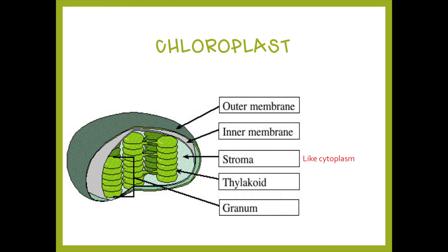Inside the chloroplast you'll find these little discs as you can see in the image. Each disc is called a thylakoid — think of it like one dinner plate. When you have a stack of thylakoids, that's called a granum, or grana for multiple stacks — think of that as a stack of plates. These three terms are very important, so make sure you have them written down.